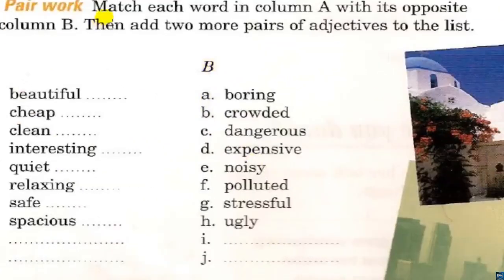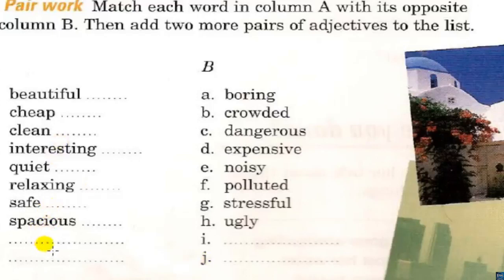Match each word in column A with its opposite in column B. Then add two more pairs of adjectives to the last column. In this exercise, you will match 1 through 10 with A, B, C, D. Then you write here an adjective and its opposite. One minute to finish.